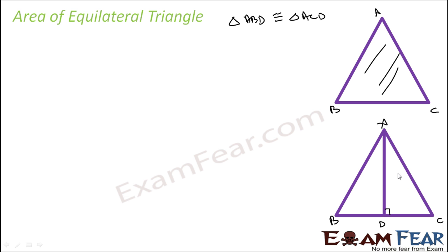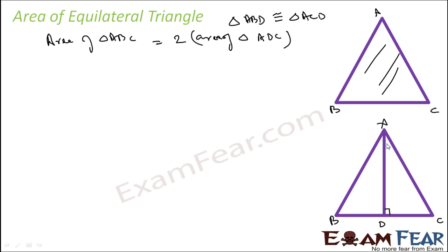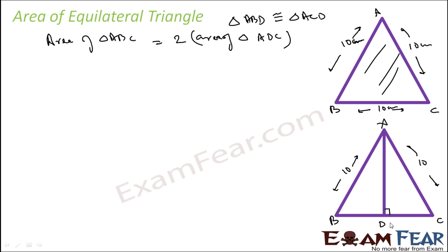So if you can find the area of one triangle, you can say that the area of triangle ABC is nothing but twice the area of triangle ADC. Let's take the example where all the sides are 10 cm. In this case, this side will be 10 cm, this will be 10 cm, so DC will be half of 10 — because it divides into two parts — so DC is 5 cm. Since this is 5 and AC is 10, we can find AD.